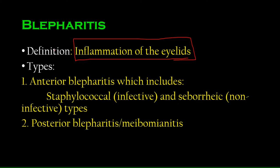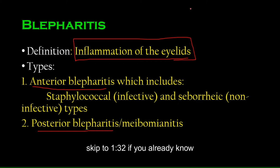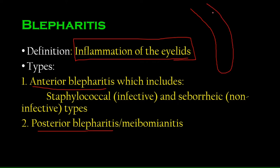Blepharitis can be caused by many conditions. There are two types: anterior blepharitis and posterior blepharitis. To understand this, let's remind ourselves of the structure of the eyelid. This is a side view of the upper eyelid — we have the eyelashes coming out of it, the tarsal plate, and associated meibomian glands.